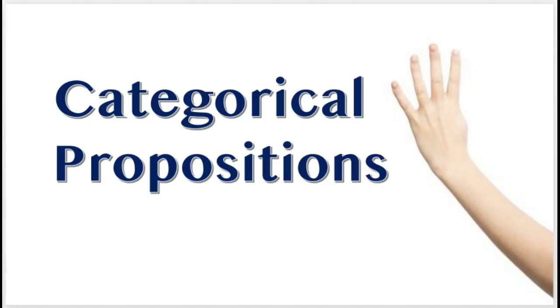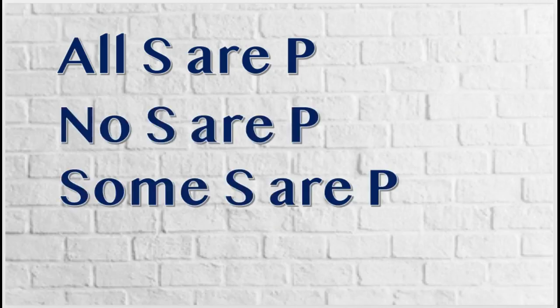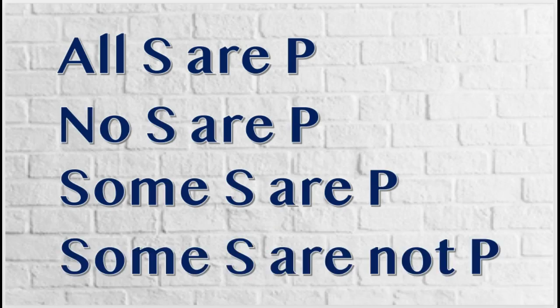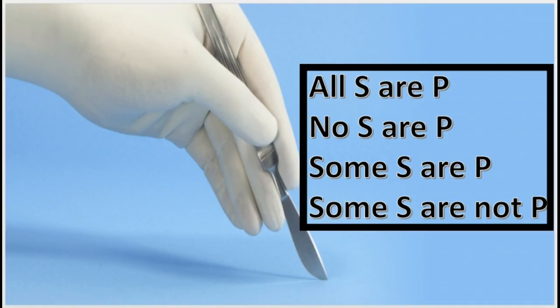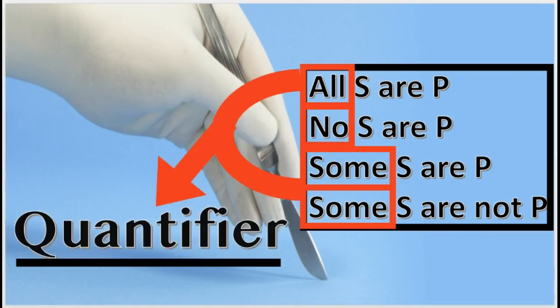Categorical propositions have these four forms: All S are P. No S are P. Some S are P. Some S are not P. Now we're going to dissect these categorical propositions. In these four forms, the words all, no, and some are called the quantifiers.